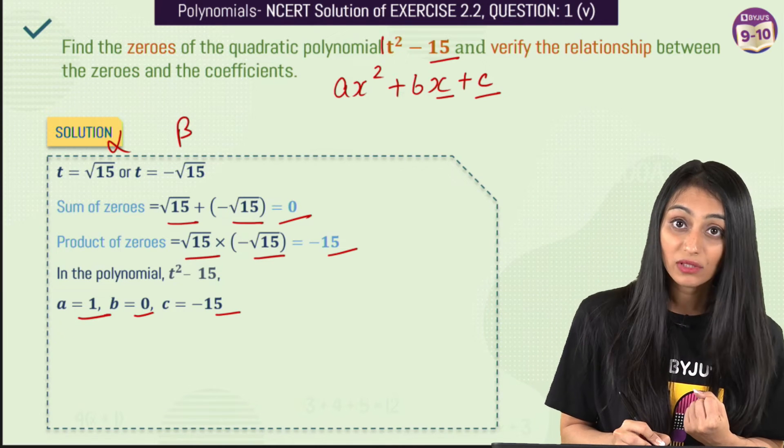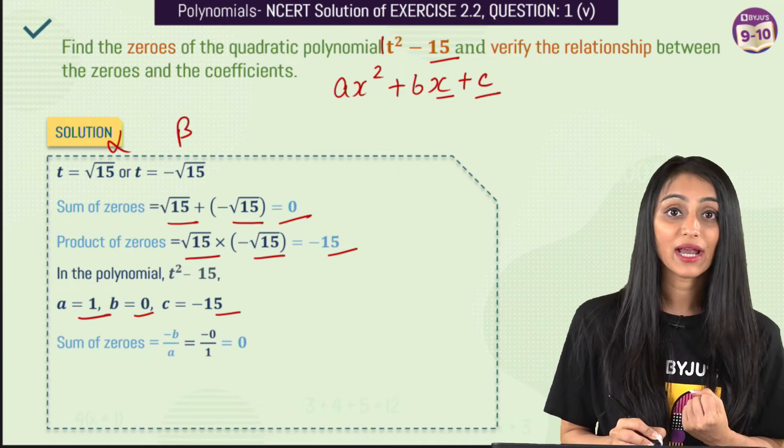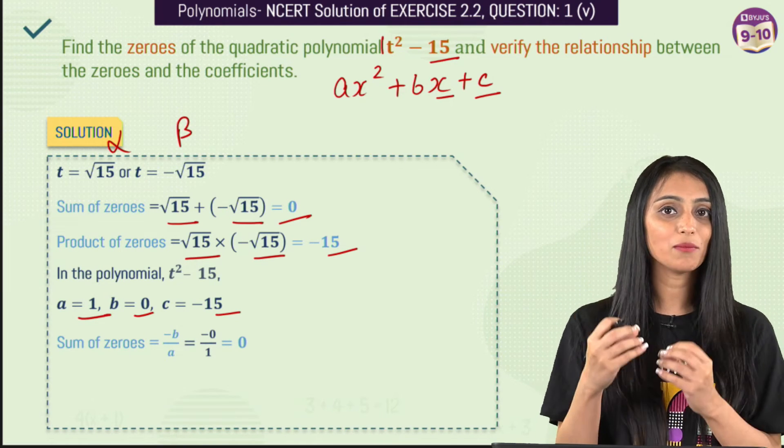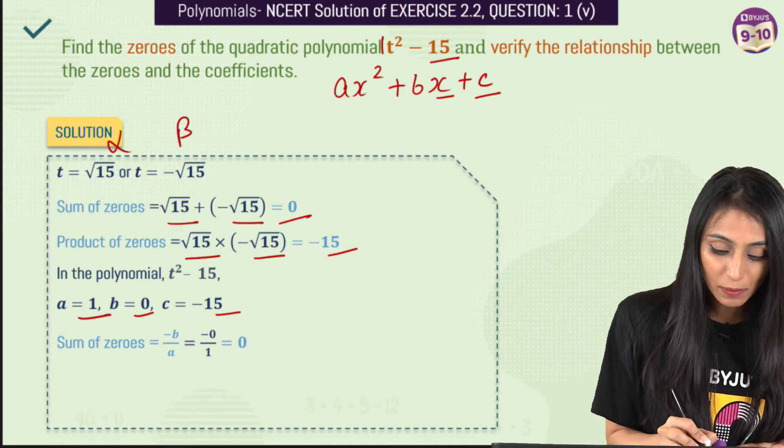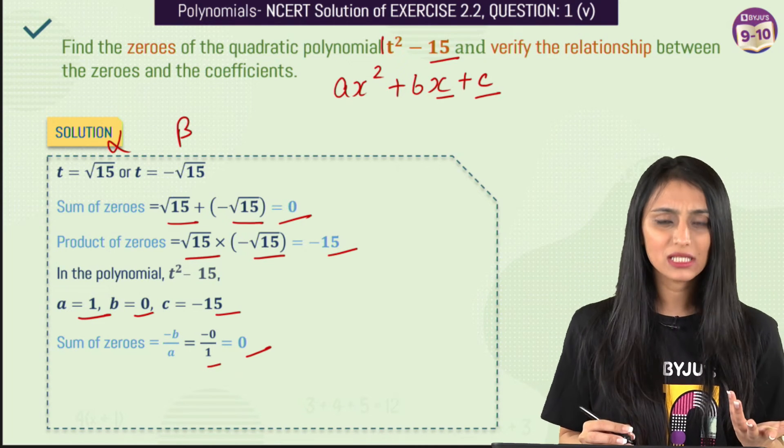So b = 0 and the constant term is -15. We have the values of a, b, and c. Now I'll find the sum of zeros using the relation -b/a. That's -0/1, which equals 0.